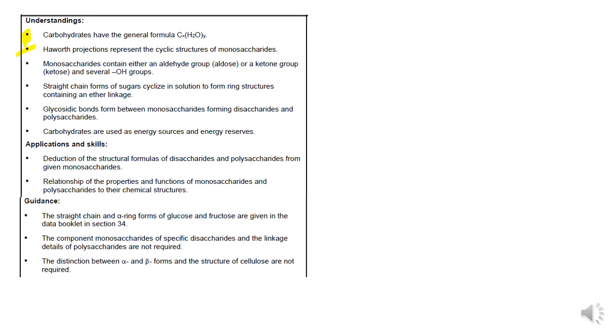I'm going to talk about different classifications, so aldose and ketose. I'm going to show straight chain converting to ring structures. I'm going to talk about condensation reactions, what carbs are used for, and how we form those polymers and some of the chemical structures.